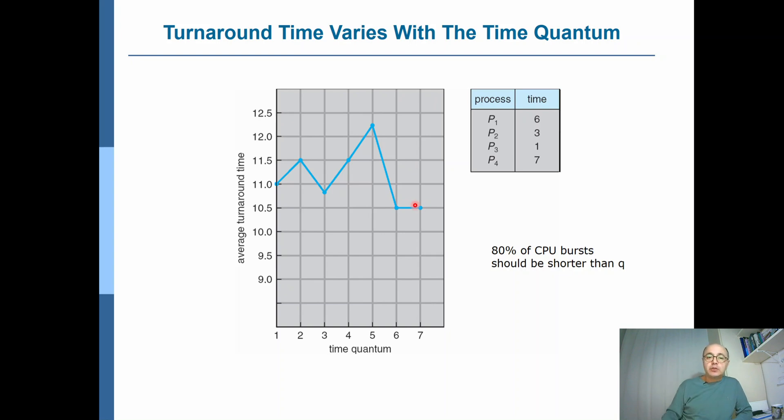So it is difficult to estimate how the effect on average turnaround time would be by varying the time quantum. But what we can say is, for a proper performance, you should pick the time quantum length such that 80% of the CPU bursts are shorter than the time quantum, which implies, in general, try to finish the CPU bursts as much as possible during the time quantum. But don't make the time quantum extremely large, because in that case, round-robin scheduling converges to first-come first-served, which has problems like Convoy Effect.